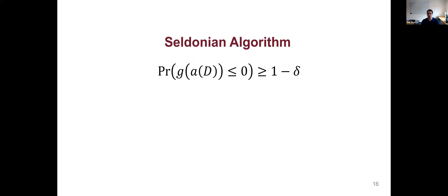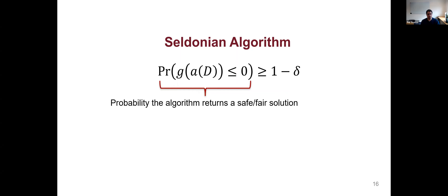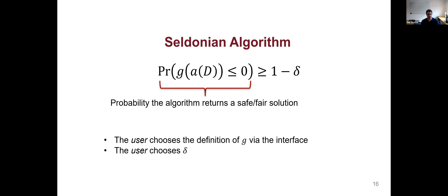A Seldonian algorithm satisfies the equation that the probability G(A(D)) ≤ 0 is at least one minus delta. A(D) is the solution returned by the algorithm; G(A(D)) measures how unsafe or unfair that solution is. When it's less than or equal to zero, the algorithm has returned a safe or fair solution. The user chooses the definition of G via the interface and chooses delta. We allow for multiple constraints with multiple Gs and deltas; for simplicity in this talk, I'll limit myself to one.